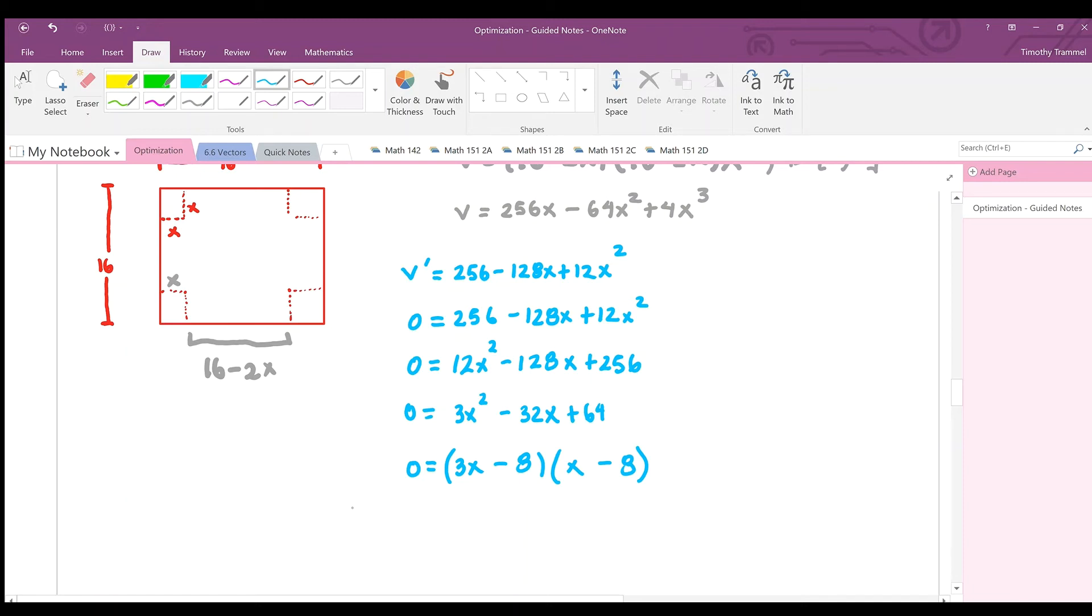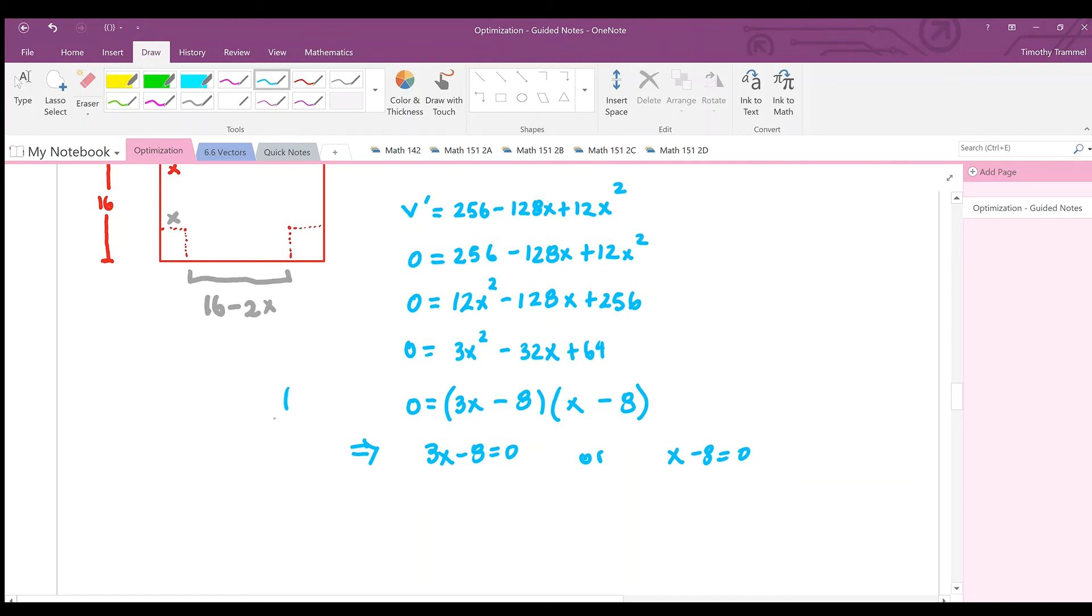So if this is the case, then this thing is 0 when x is equal to what? Actually, I should write this out. 3x minus 8 is equal to 0, or x minus 8 is equal to 0. So this tells us that the first derivative is 0 when x is equal to what? 8 thirds or x is equal to 8. So we have two critical points: x equals 8 thirds, x equals 8, and those just came from our derivative.